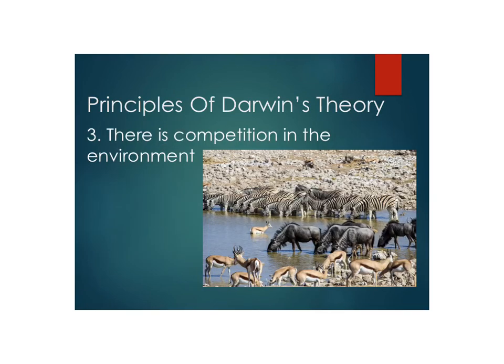The third principle of Darwin's theory is that there is competition in the environment. There's competition for food, for water, for someplace to sleep, for who gets the mate they want, and to keep away from predators. An example is the watering hole in Africa — there's limited water, everybody has to share and get in there, so there's competition in the environment.